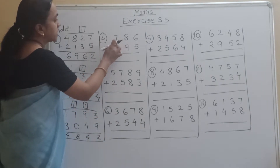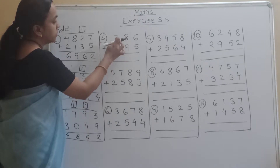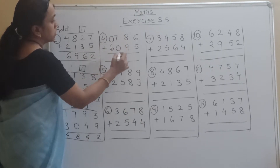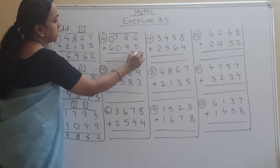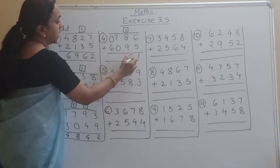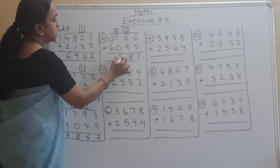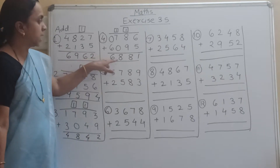Now see the fourth example: 786 plus 6095. This 100s place should be below this 0. Write down 1 and 0 to align properly so you will not get confused. Then 6 plus 5 is 11, carry 1. Write down carry 1. Then 7 plus 1 is 8, 8 plus 0 is 8, 6 plus 0 is 6. So our answer is 6881.